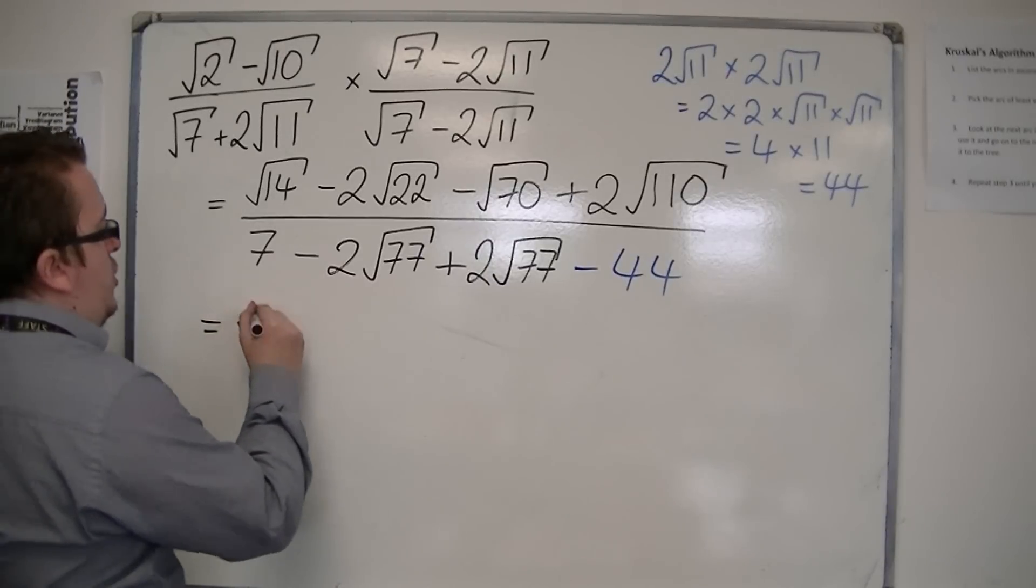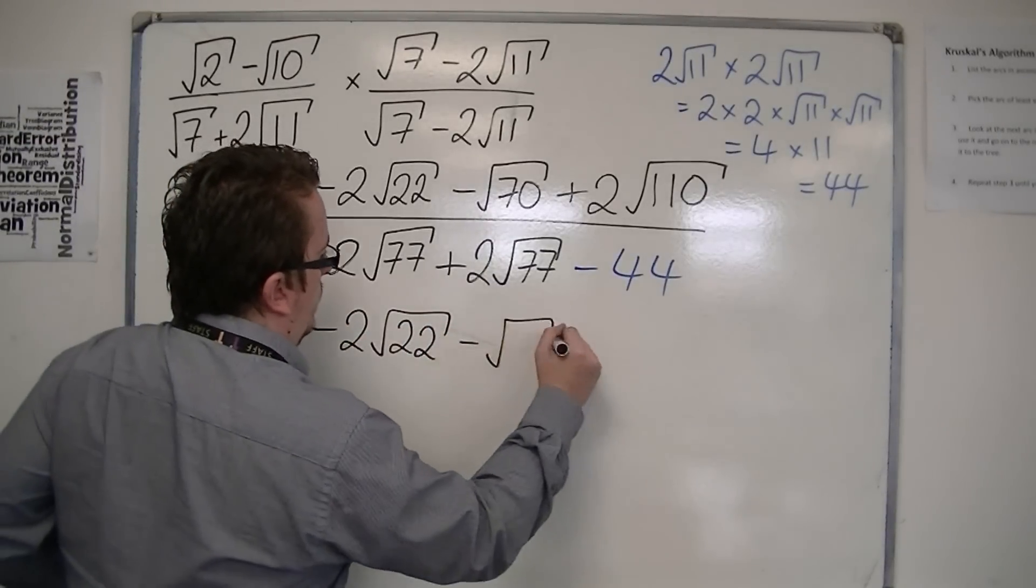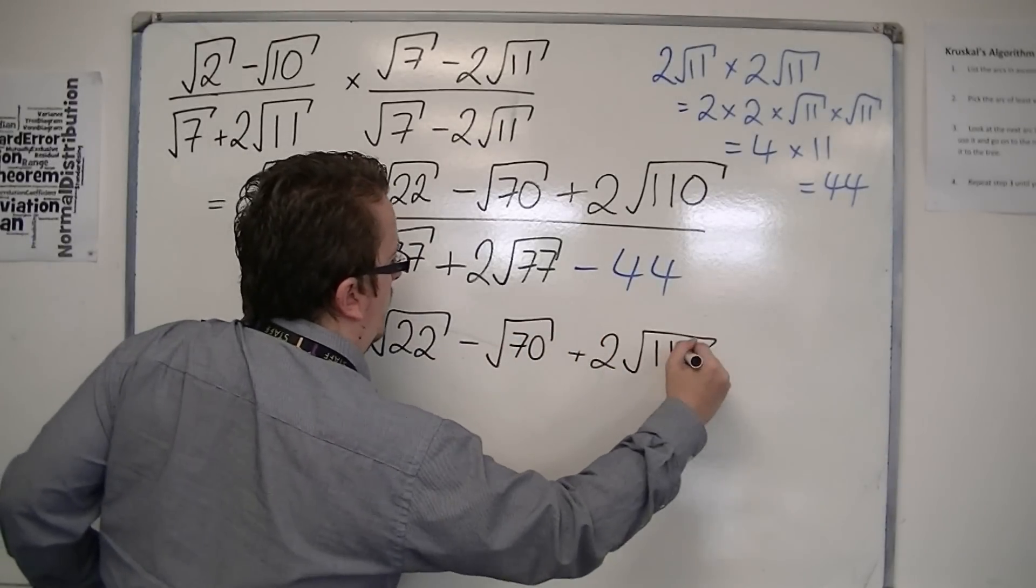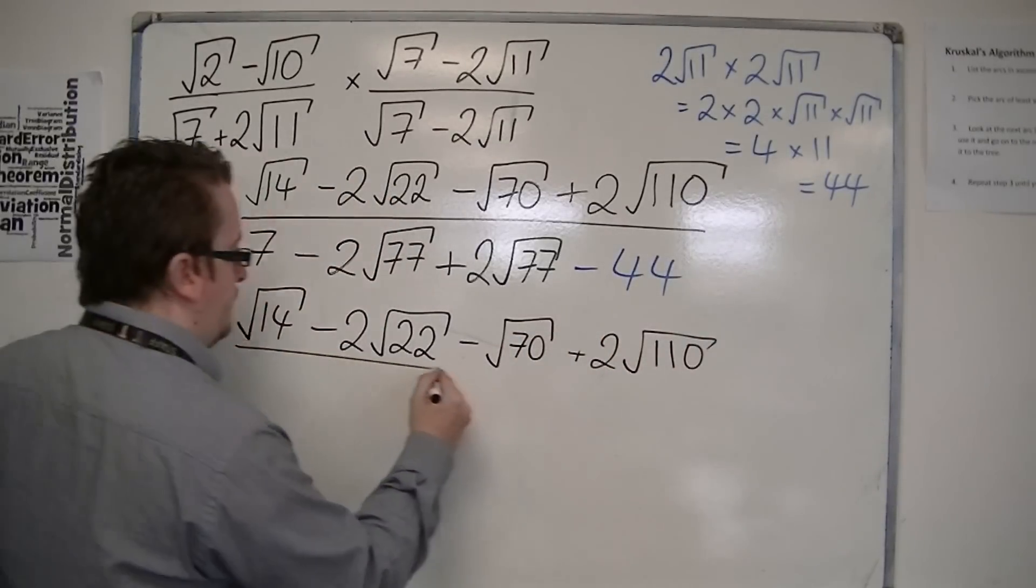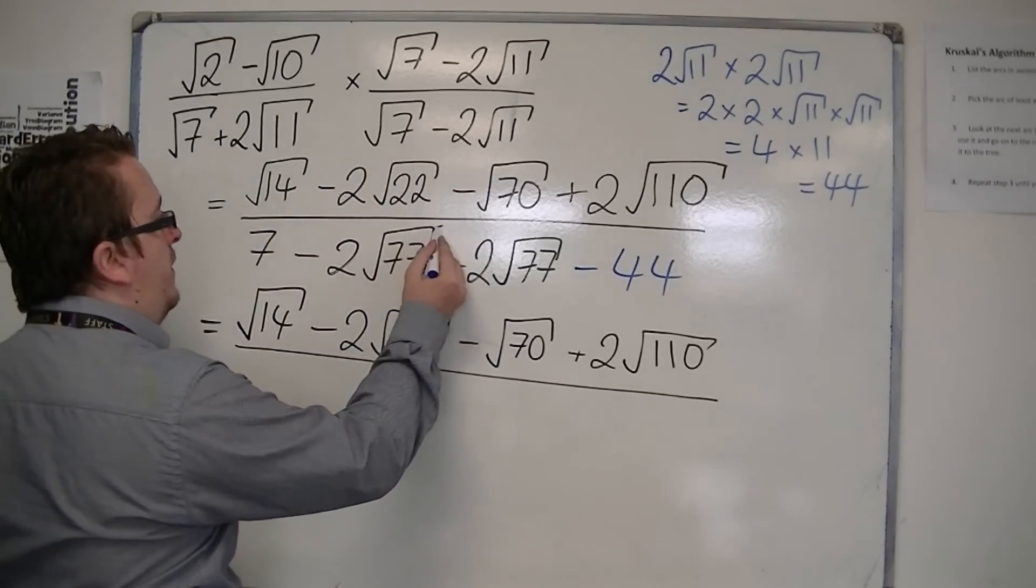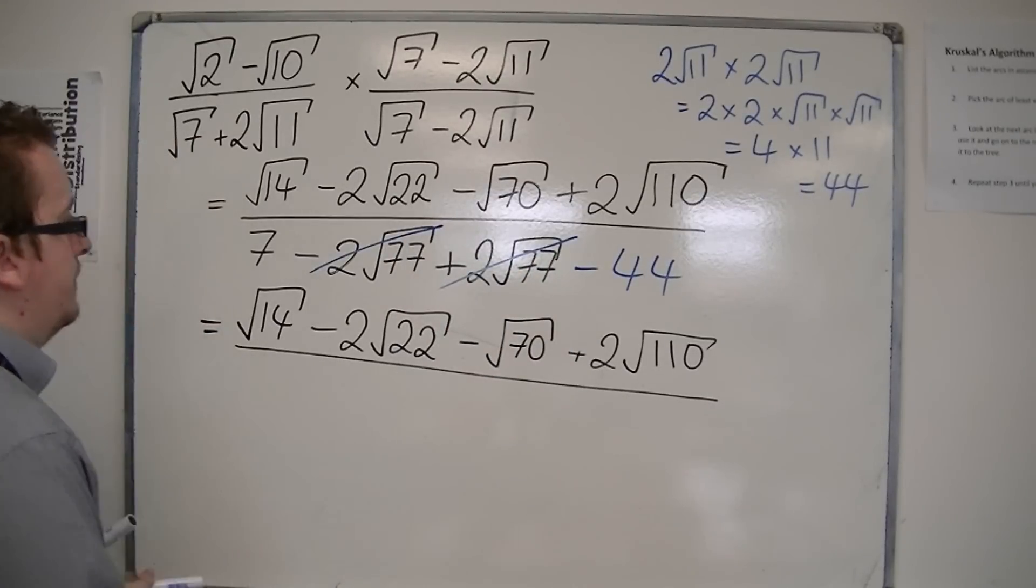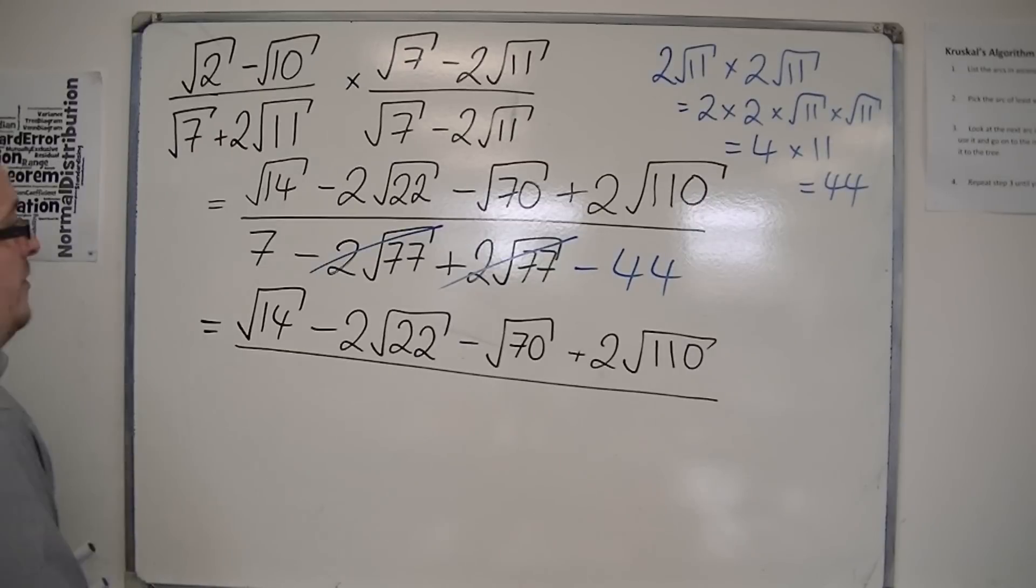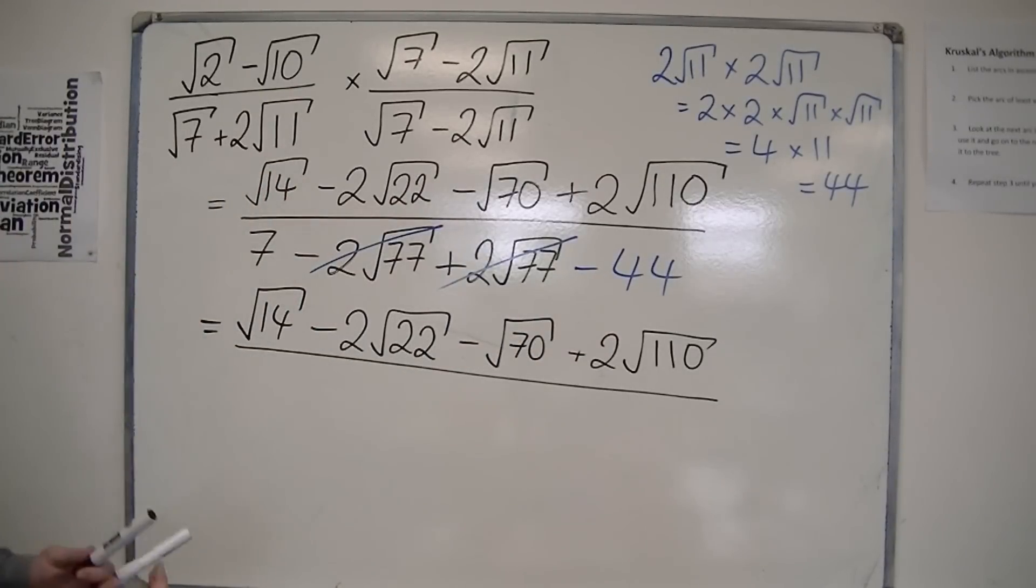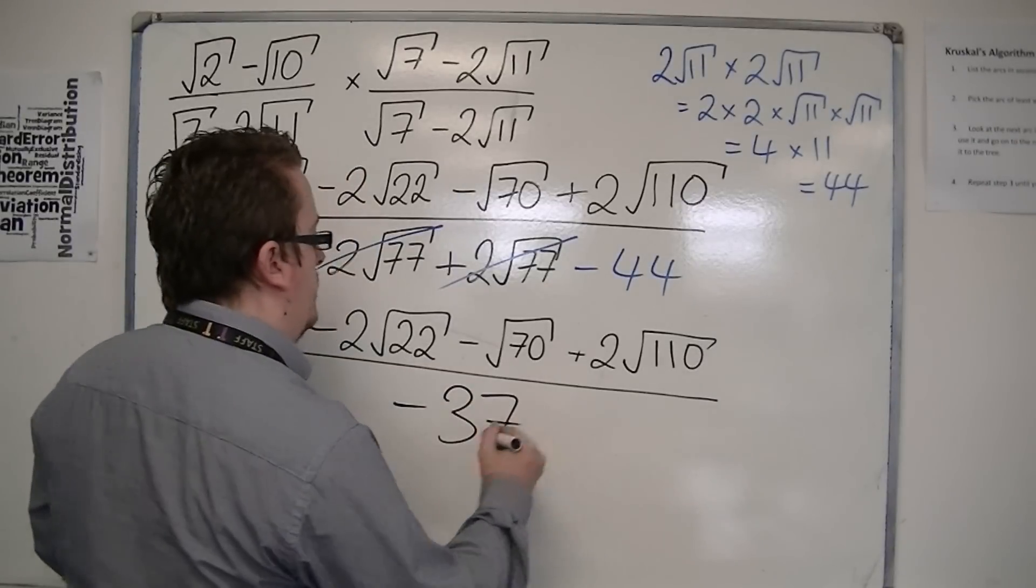So the numerator stays exactly the same. And then on the denominator, we've got the minus 2 root 77, and the plus 2 root 77, cancelling one another out. And then you've got 7, take away 44, so that you've got minus 37 on the denominator.